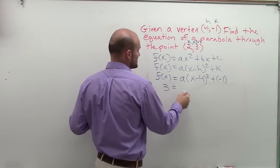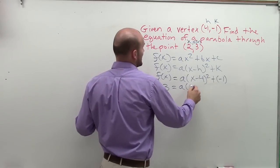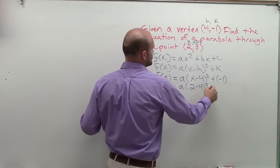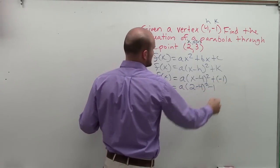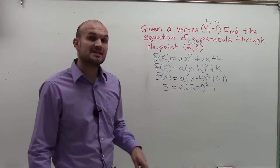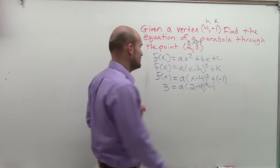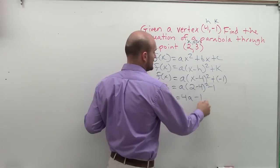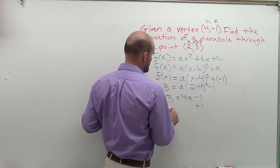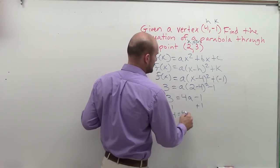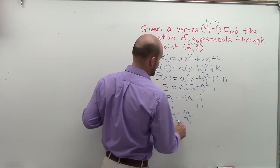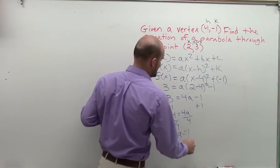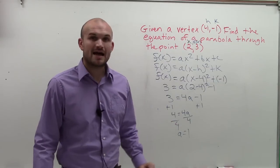So that's exactly what you do. You plug 3 in for f of x. Still don't know a. Then we do 2 minus 4 squared plus negative 1 is the same thing as minus 1. 2 minus 4 is negative 2. Squared is going to be 4. I'll rewrite the 4 in front of the a minus 1. Add 1. 4 equals 4a, divide by 4, divide by 4, a equals 1. So now we know the value of a.